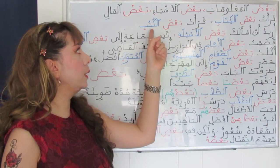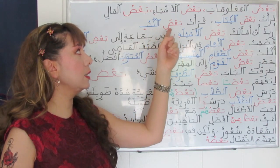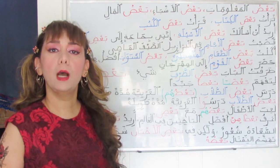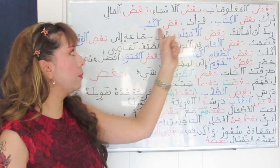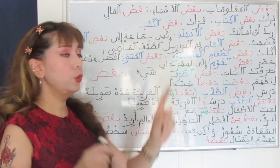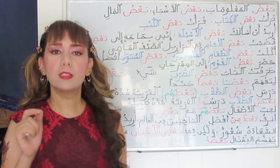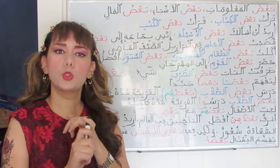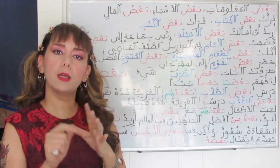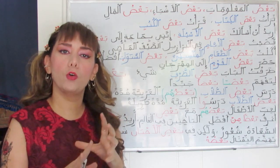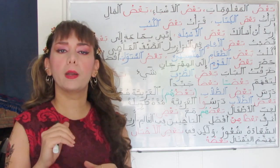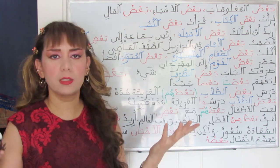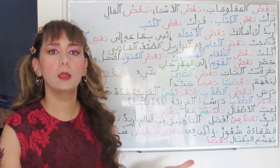Qara'tu ba'da al-kutubi — here it is followed by the plural noun of al-kitab, al-kutub. You may translate 'qara'tu ba'da al-kutubi' in two ways: 'I read some of the books' or 'I read some books.' Both translations are correct.